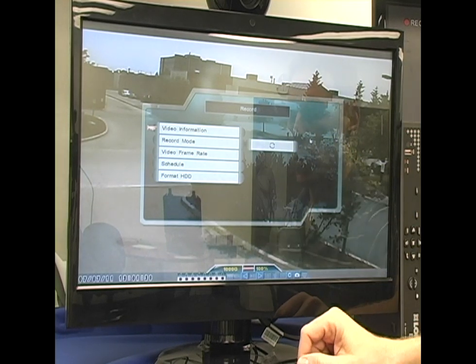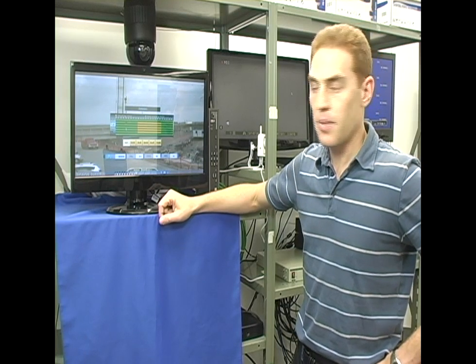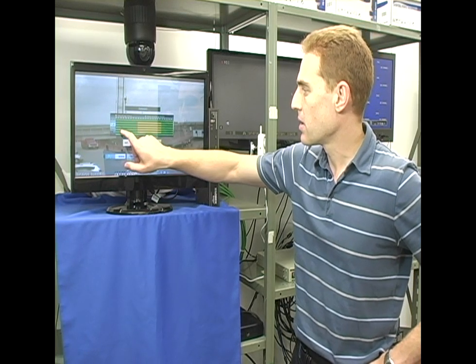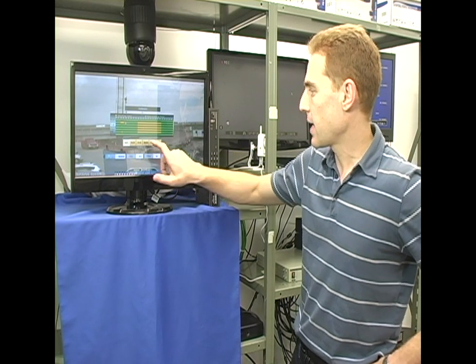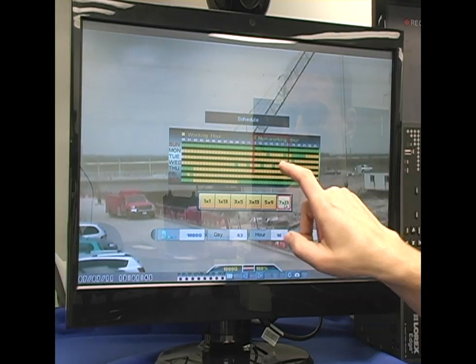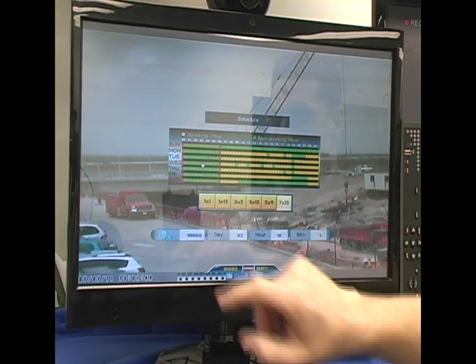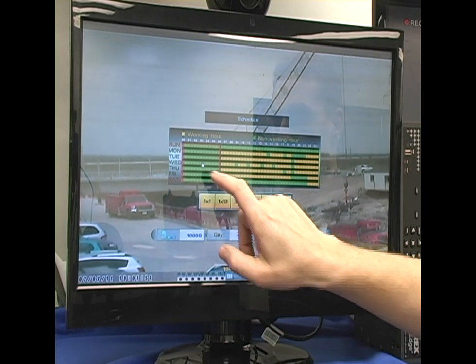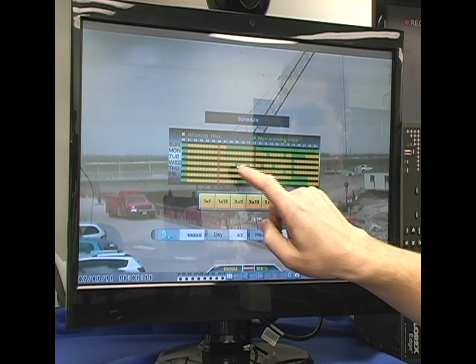Recording mode options. I can set up my working hours and my non-working hours. I can tap to turn a non-working hour into a working hour. I can create different sizes of squares. So far you've seen I've been able to operate the system with a touch of a finger.